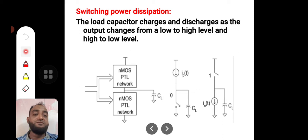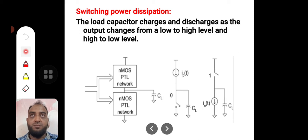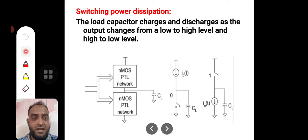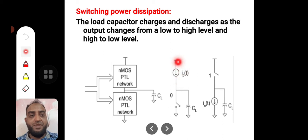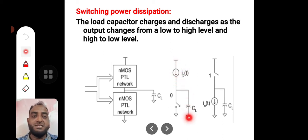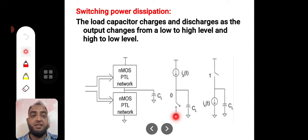Consider some combination of inputs where the pull-up device is on and the pull-down network is off. In such conditions, the current I_P will be drawn from the supply, passed through the pull-up device, and charges the capacitor. Because the pull-down network is off, the current cannot take that path — it has to take the pull-up path.